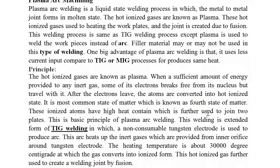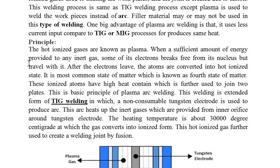The principle of plasma arc welding: the hot ionized gases are known as plasma. When a sufficient amount of energy is provided to any inert gas, some of its electrons break free from their nucleus but travel with it. After the electrons leave, the atoms are converted into a hot ionized state. This is the most common state of matter known as the fourth state of matter. These ionized atoms have high heat content, which is further used to join two plates.